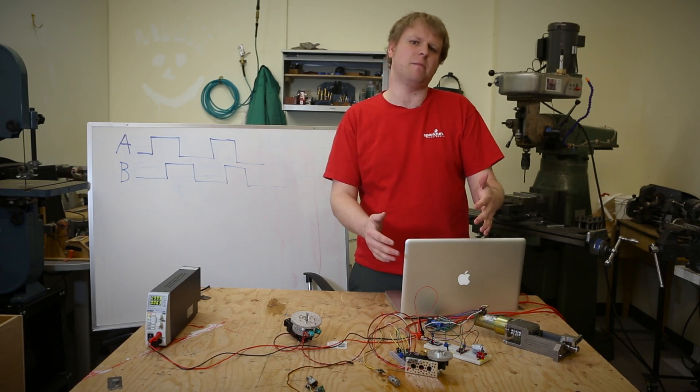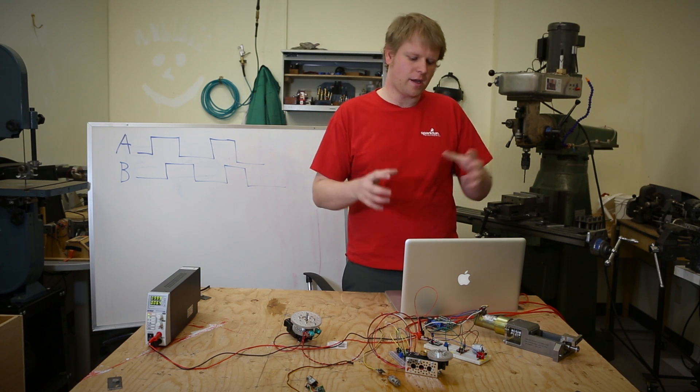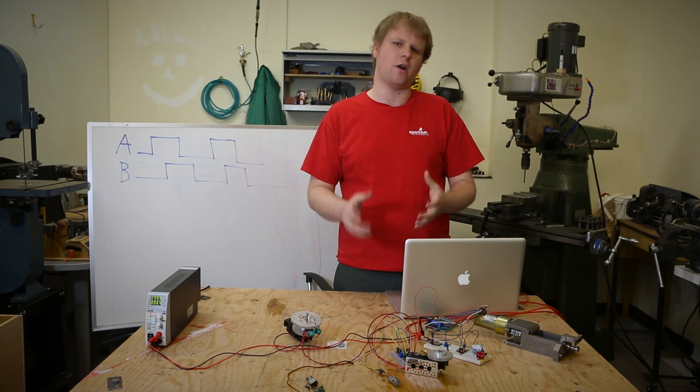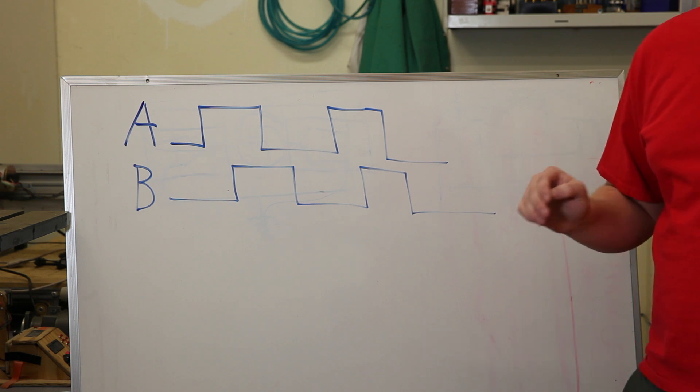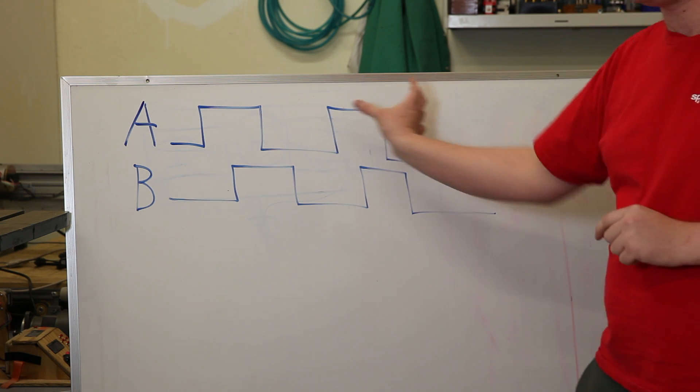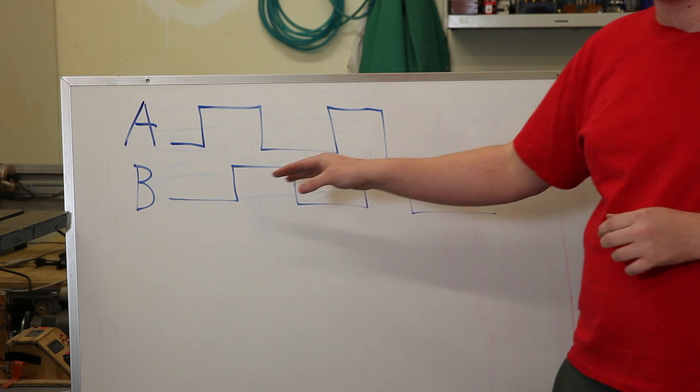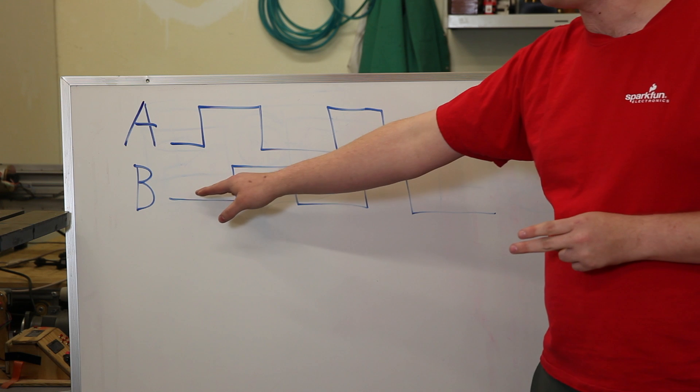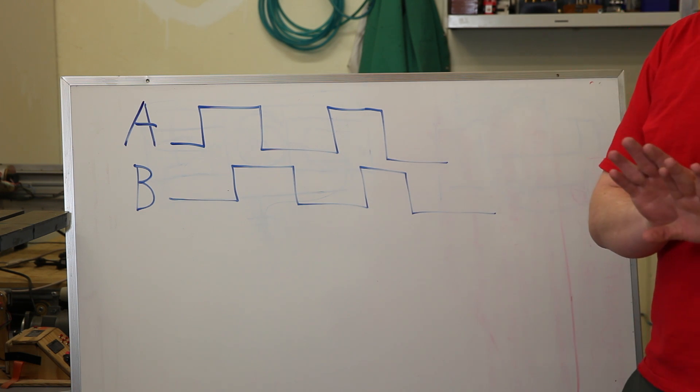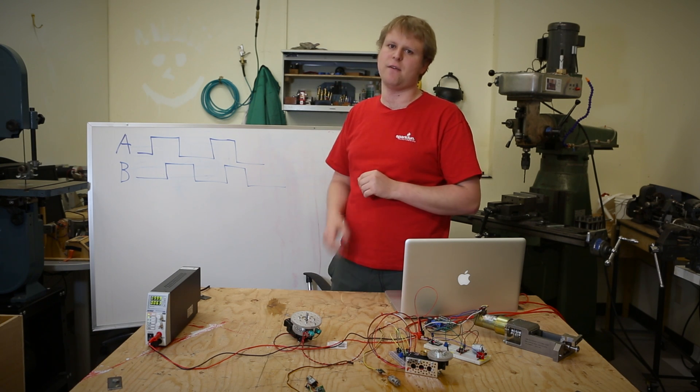Right now we've been detecting speed, but what if we wanted to detect direction? This is where we use a term called quadrature encoding. If we were just using a single input encoder, we would have a nice little square wave that tells us the distance between each pulse, which tells us how fast the motor's moving. We're going to add a second detector, but we're going to put it 90 degrees out of phase. A typical encoder wheel is either a series of slots or light and dark splotches, 90 degrees out of phase.